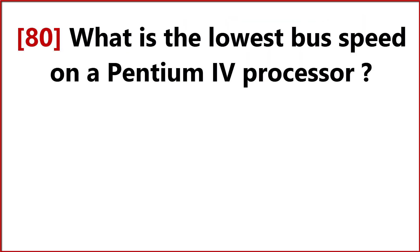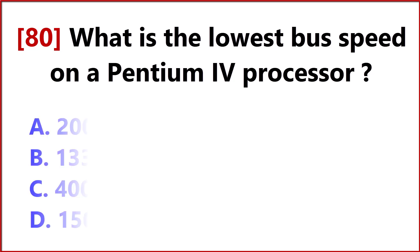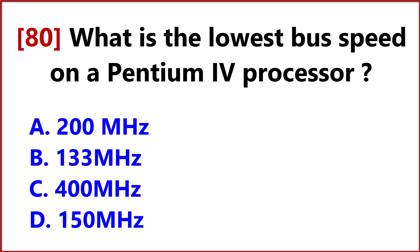What is the lowest bus speed on a Pentium 4 processor? Answer Option C: 400 MHz.